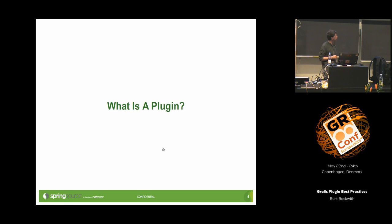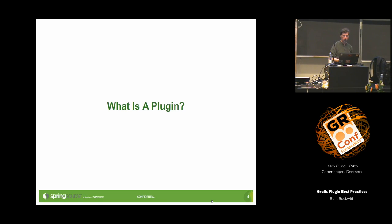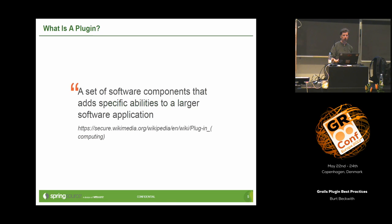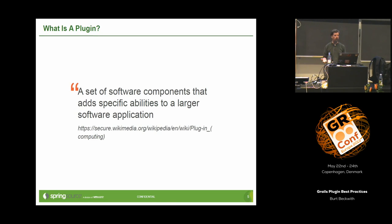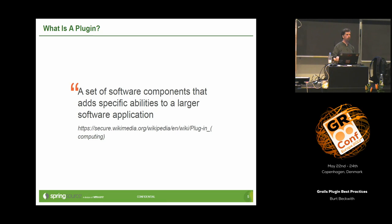Basically, having written a lot of these and having done a lot of pull requests for new plugins, I'd like to share the patterns that have emerged. But first, let's talk about what a plugin is in general, what a plugin is in Grails. There is a sort of accepted standard definition from Wikipedia — it plugs into, adds on to some larger system, and adds or changes behavior.